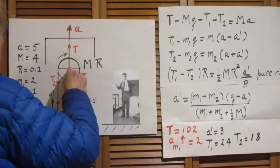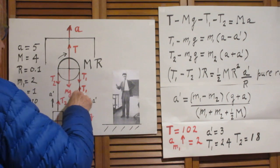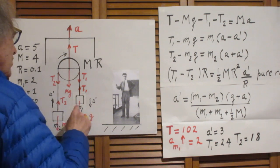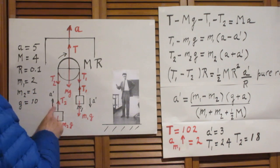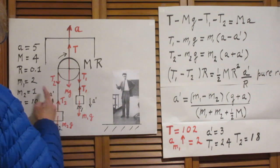So we know that if we stand in the elevator, we will see this object being accelerated downwards with acceleration a prime, and this one will be accelerated upwards with the same acceleration a prime.